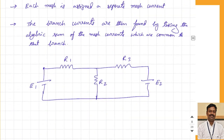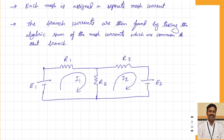Let us take an example circuit. First I will find out how many meshes are there. A mesh is a closed path which doesn't have any other loop inside it. So this will be one mesh, and this second one also will be one mesh. I assign current I1 to the first mesh and I2 to the second mesh — just the mesh currents, not the currents passing through individual elements. Once the mesh currents are calculated, I can find the current through any branch using the algebraic sum.